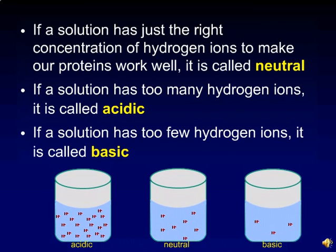If a solution has just the right concentration of hydrogen ions to make our cells and proteins work well, it is called a neutral solution. If a solution has too many hydrogen ions, it is called acidic. If a solution has too few hydrogen ions, it is called basic.